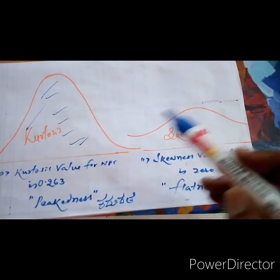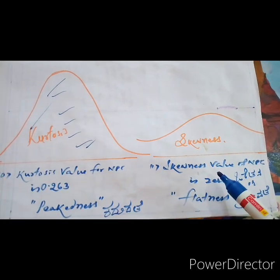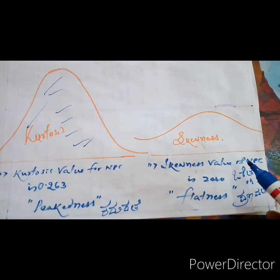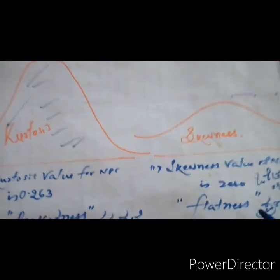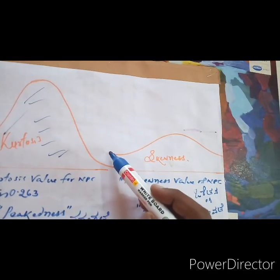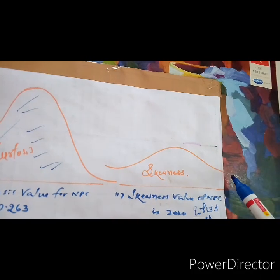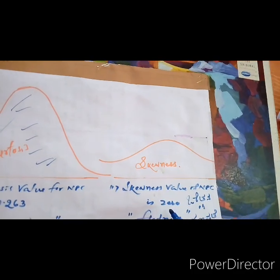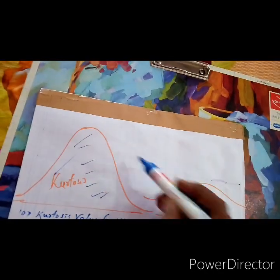And the next point, 11th is, skewness value of NPC is 0. In English, that we call flatness. Flatness means, you see this figure, it is very flat in nature. The value is 0. This we can call it as flatness of these things.